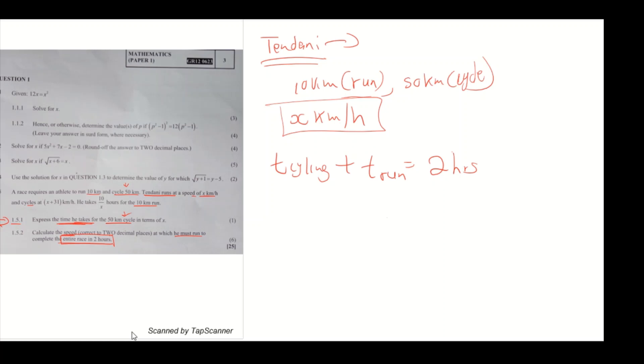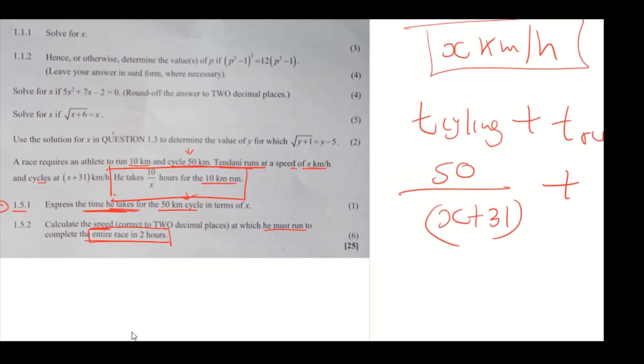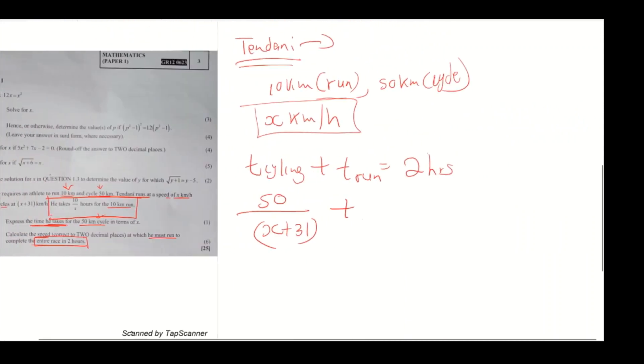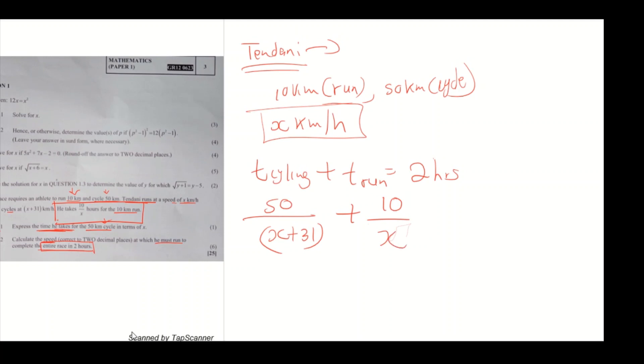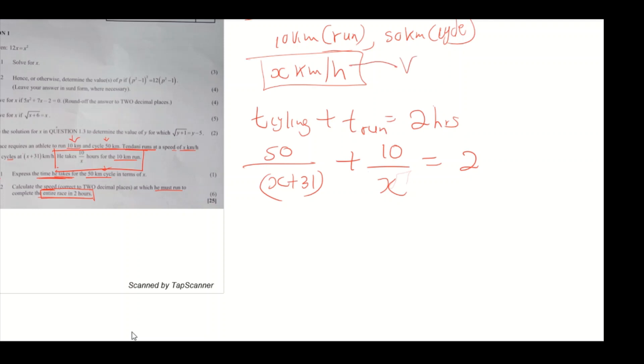We're going to add the time for cycling, which is 50 over x plus 31, to the time for running, which is 10 over x hours. This equals 2 hours. The whole point is to find x because x is the velocity. Cross multiply to remove everything at the denominator. So you get 50x over x plus 31 plus 10 equals 2x.